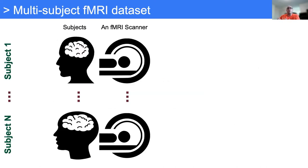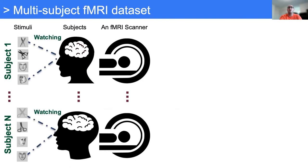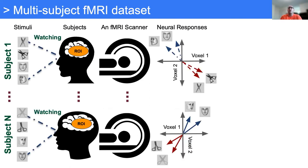Up to now we've talked about a single subject's brain. Decoding your own brain based on your own neural activity is a relatively easy task. But for most cases, neuroscientists are looking to generalize the model for multiple subjects. So that's the reason we repeat all of the experiments for multiple subjects and get neural responses from those subjects.